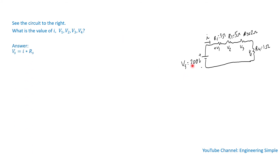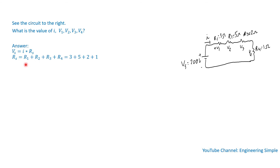We know the applied voltage equals the current times the equivalent series resistance. So the series resistance is 3 plus 5 plus 2 plus 1, which equals 11 ohms. We have the voltage and the resistance, so the current is 200 divided by 11, which is 18.18 amps.